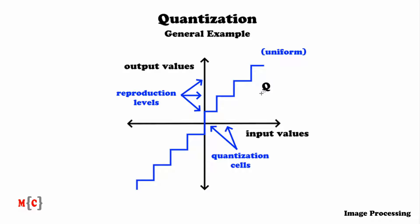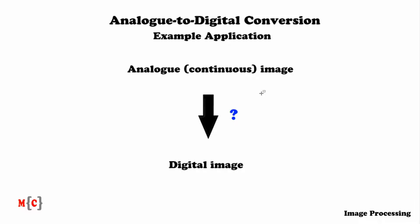Let's now look at the specific application within image processing for quantization. A very logical application for this is analog to digital conversion. And for image processing, we would then convert an analog image, or in other words, a continuous image, to a digital image. The question is now, how do we do this? And of course, this involves quantization.